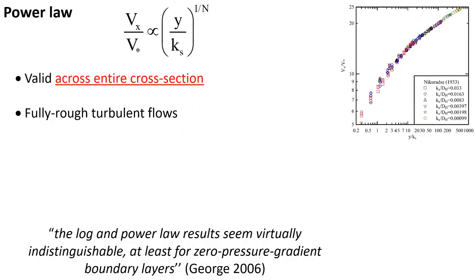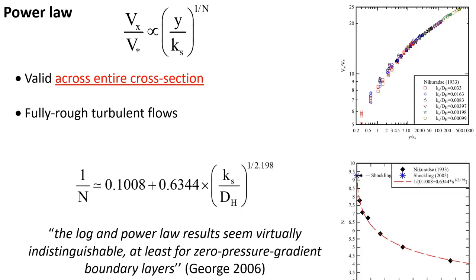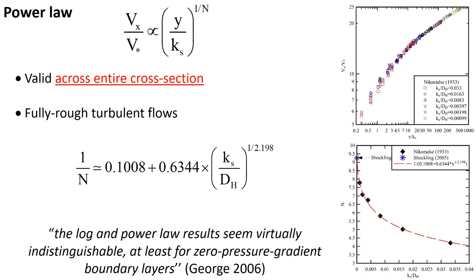The data of Nikuradse can also be matched closely with a power law valid across the entire cross section, in which the exponent of the power law is itself a function of the relative roughness height, shown on the bottom right with an additional dataset coming from the Superpipe data.